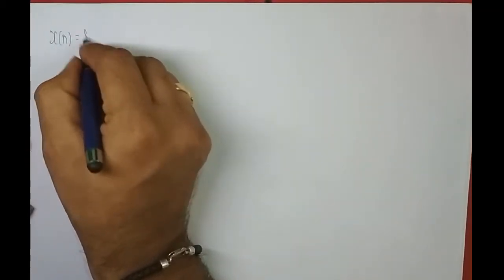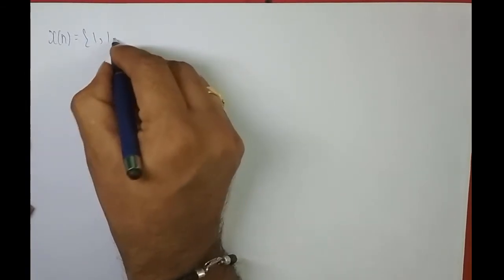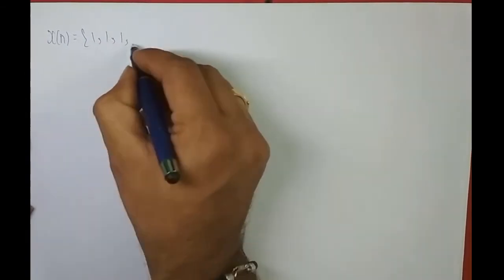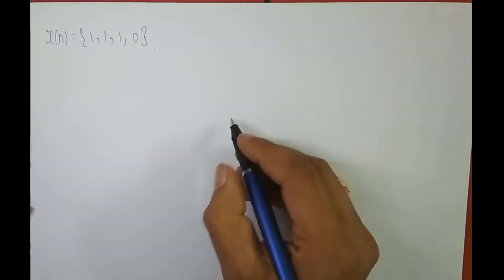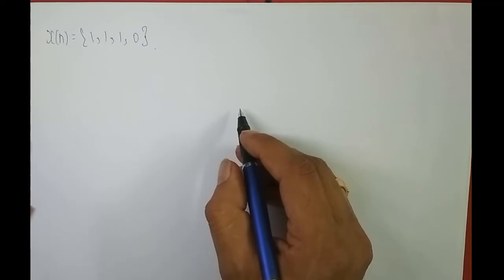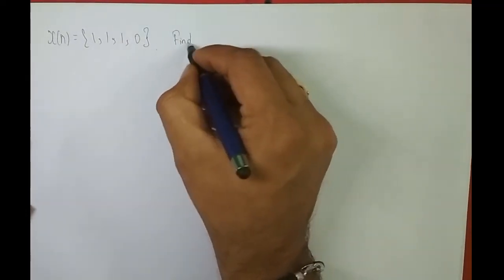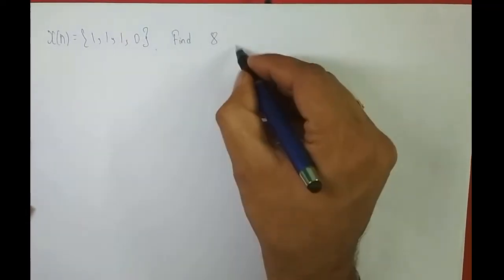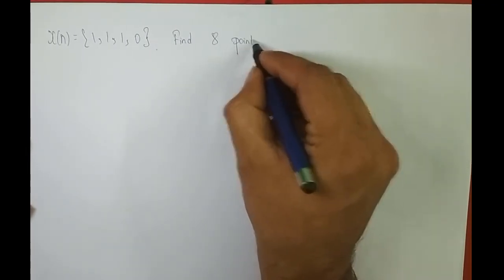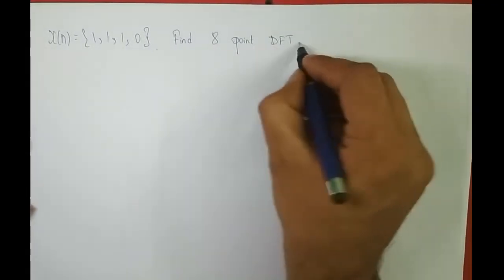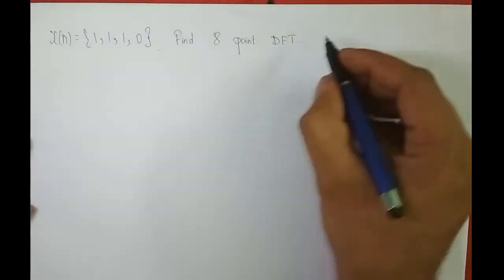Hey guys, take one exercise problem on finding 8-point DFT. The problem is x of n is equal to {1, 1, 1, 0}. This is the time domain sequence x of n which is 1 1 1 0, and you have to find the 8-point DFT of this sequence x of n.